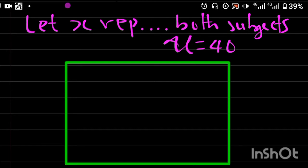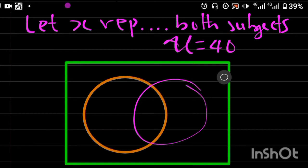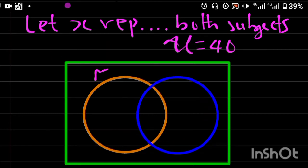We have mathematics and physics. Let this be mathematics and let this be physics. The number of students that offer both subjects is X.